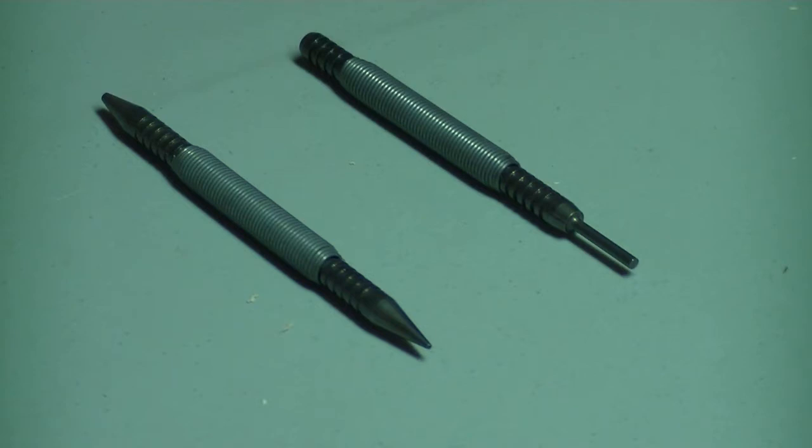So traditionally we would have a nail set and we would strike it with a hammer so we'd have to carry a hammer around with us and that's why you have a loop in your painter's pants to carry a hammer and nail set around.